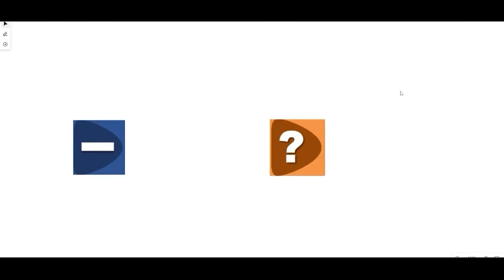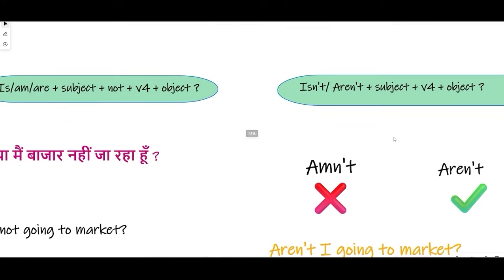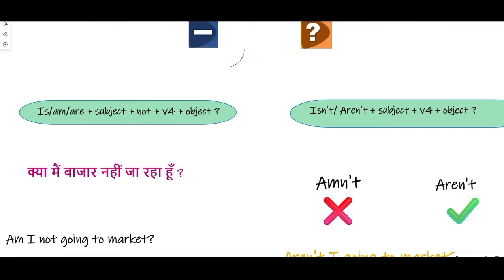If a sentence is negative interrogative, then what do you do? In a simple sentence, you have to place the subject and then add not, or what you do is add not after the helping verb.